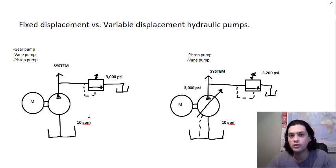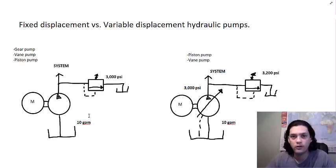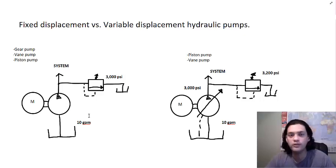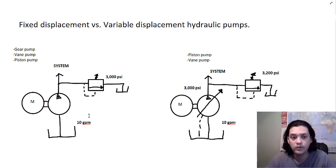What happens is you're generating heat, wasting horsepower, and paying for energy you're not using. For a system that runs only a few minutes — say you have a cylinder and a ramp to lift or lower a platform, working it for a couple of minutes — the fluid dumping through the relief valve may only be for a few seconds, so you can get away with it. It's not enough time to overheat the system.